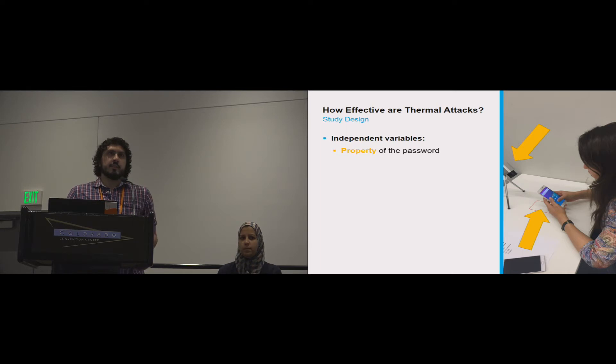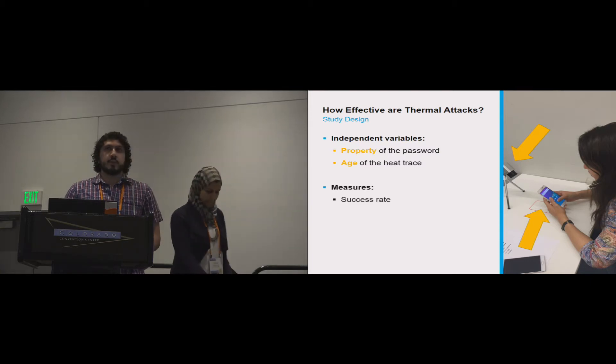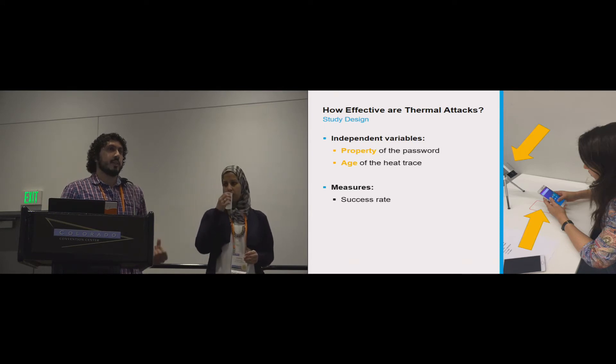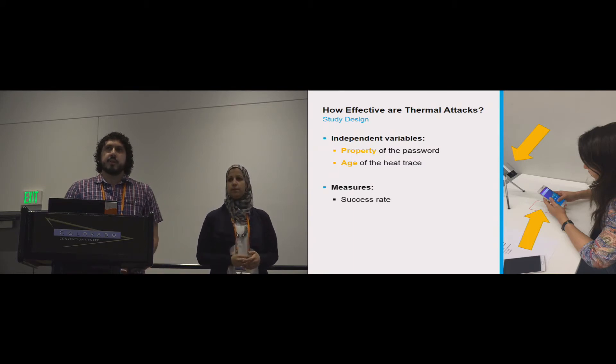We investigated the effect of two independent variables on the effectiveness of thermal attacks. One thing is the property of the password. For PINs and patterns, we investigated which properties can make them more resilient to thermal attacks. We also investigated the effect of the age of the heat trace. As Yumna said, the heat traces decay over time, and we wanted to see to what extent can we still perform thermal attacks after authentication has been performed. To really understand how well this works, we measured the success rate, which basically tells us how successful the thermal attacks are in uncovering the PIN or the pattern. If we say we have a success rate of 50%, this means 50% of the PINs or patterns were successfully found using thermal attacks.